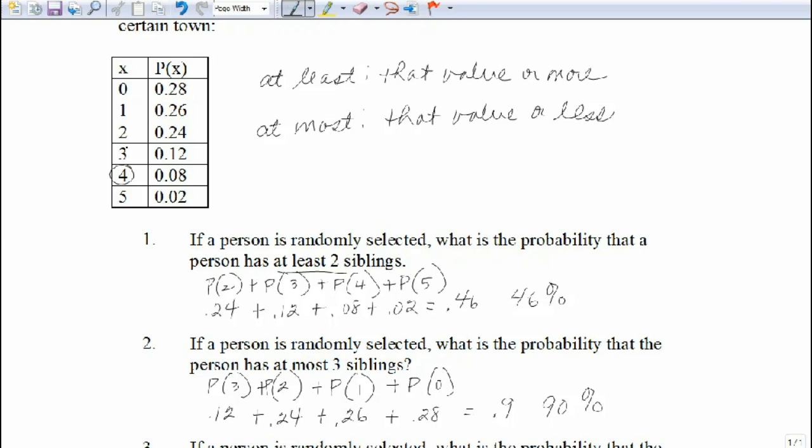And at most means that value or less. So four, three, two, one, or none. Now here we go. There's another example of where we can use our complement. Because we want this total. This is what we want. But five is what we don't want. So this is the not.